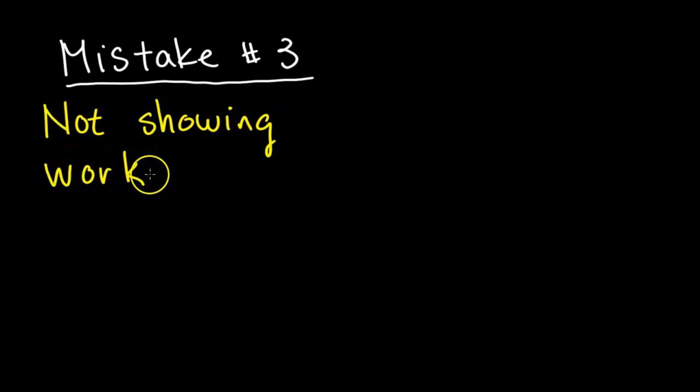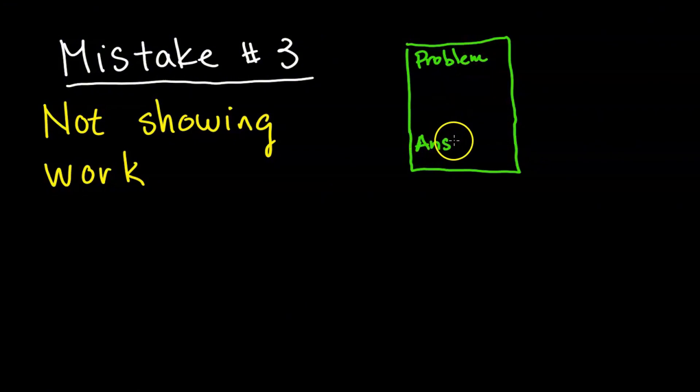The third biggest mistake students make is not showing work on their solutions. When students don't show work, it's very easy to be confused about your thought process. Your instructor will also have a hard time helping to spot your error if they can't see your work. When you show your work, you can easily go back and look at which step you made the mistake.